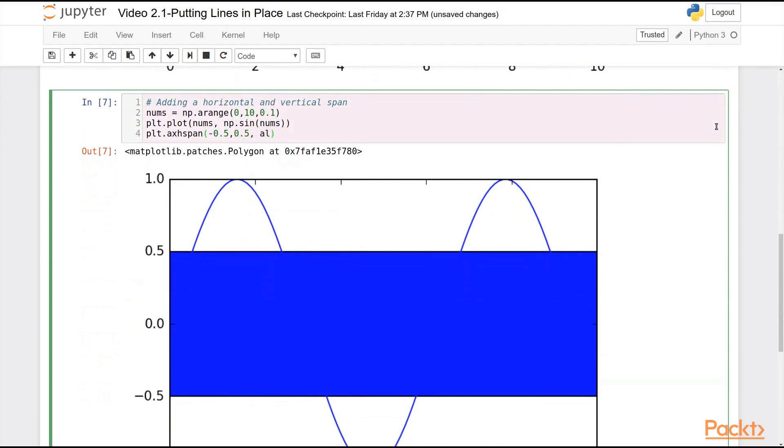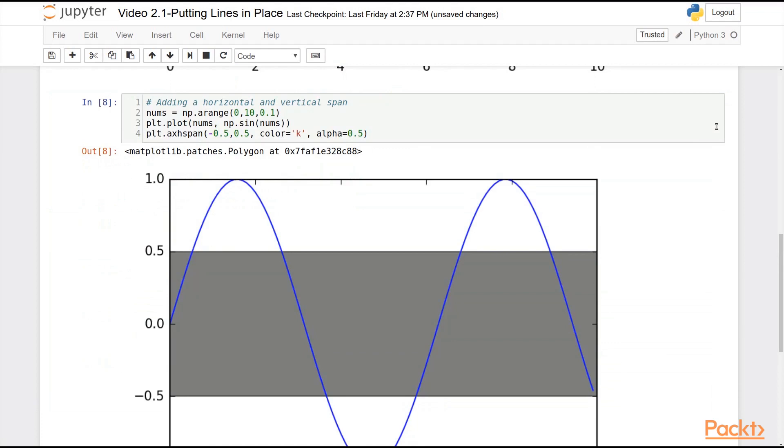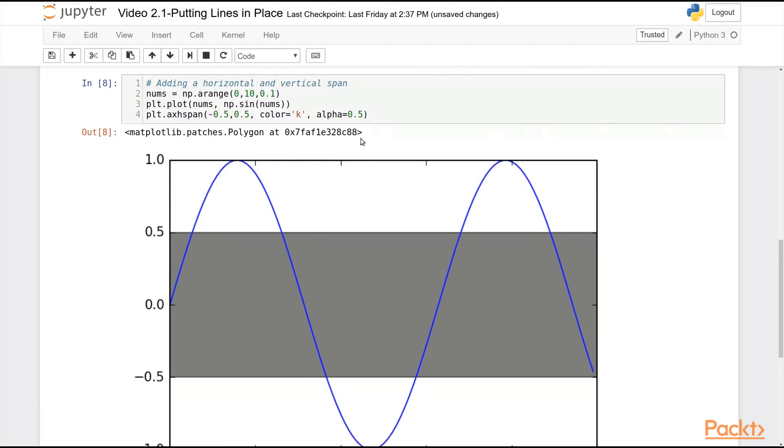Now that blocks out a lot of our data, so we'll often times want to customize this appearance-wise. So this is just like any other shaded region, something we can give appearance attributes to. So let's make this black, and let's give it an alpha of 0.5 so that it's transparent. And there you go. Now you can see, as you might imagine...